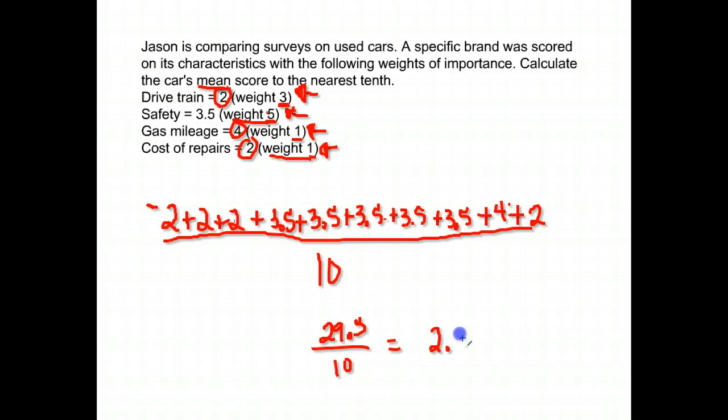That gives us a rating of 2.95. They want it rounded to the nearest tenth. So this five is going to make the nine round up. So 2.99 rounds up to ten or three. In this case, it rounds it up to 3.0.